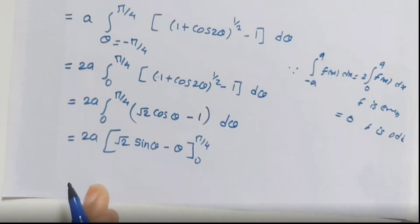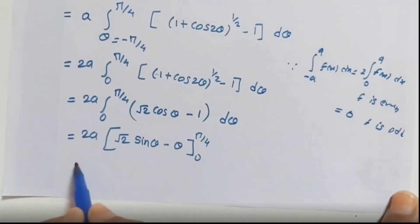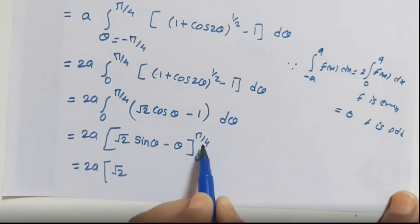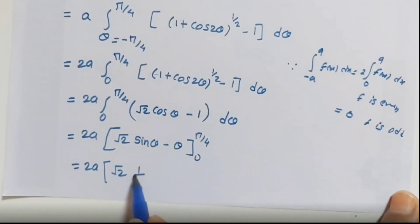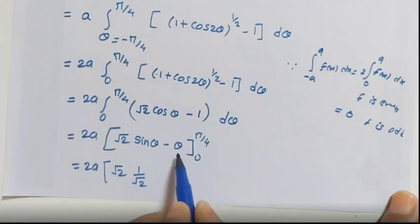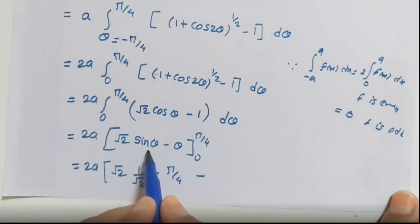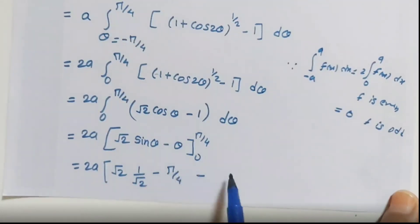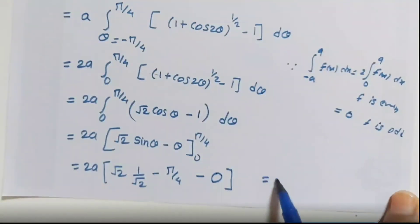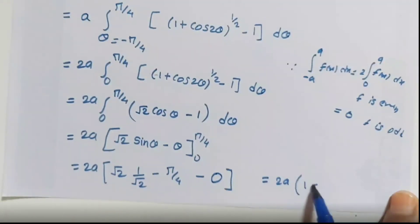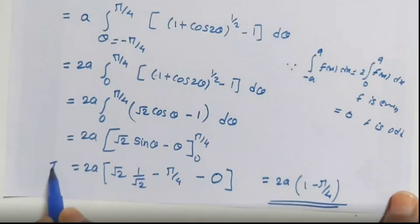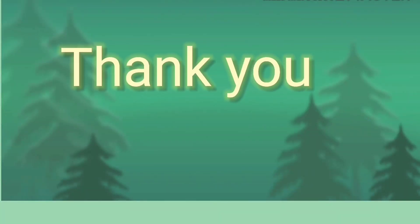This gives 2a times the integral from 0 to π/4 of (√2·cosθ − 1) dθ. Integrating: √2·sinθ − θ, evaluated from 0 to π/4. At π/4: √2·sin(π/4)−π/4 = √2·(1/√2)−π/4 = 1−π/4. At 0, the bracket is zero. So the final answer is I = 2a(1 − π/4).